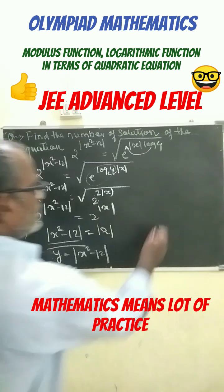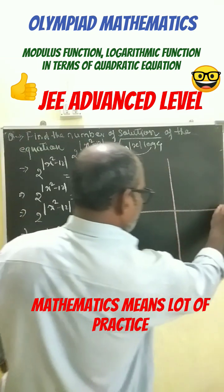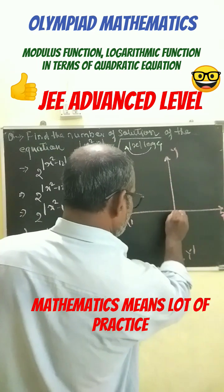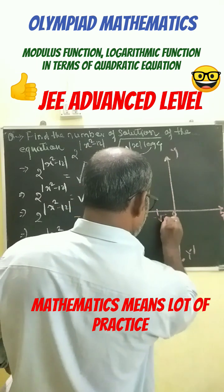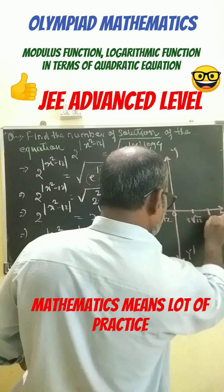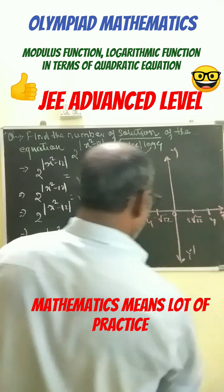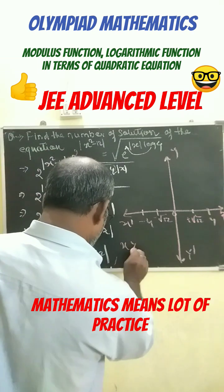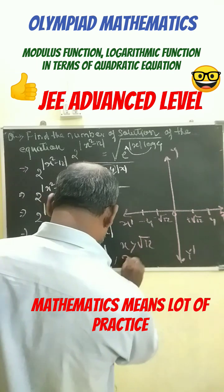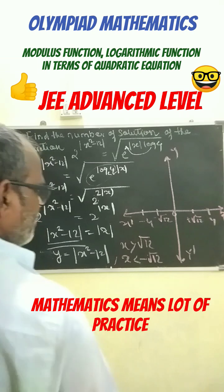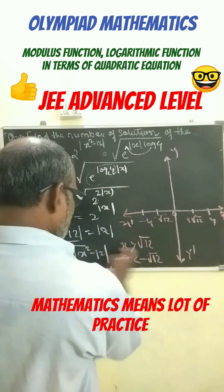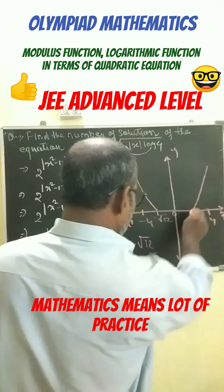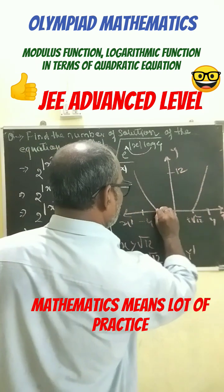For y equals to mod of x squared minus 12, the graph would be like this — here is x, x dash, y, y dash, this is 0. We mark minus root 12, plus root 12, this is 4, this is minus 4. We have two conditions: x is greater than root 12 and x is less than minus root 12. From here the graph comes in this way.